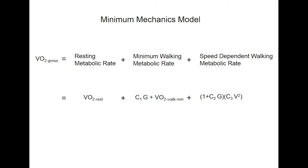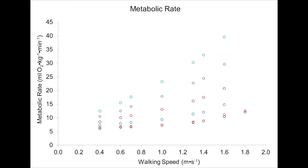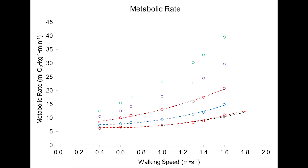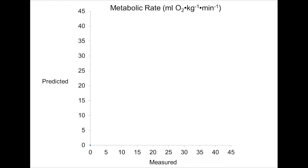Our minimum mechanics model partitions the body's total metabolic rate into a fasted supine resting component, a minimum walking component, and a speed-dependent component. Two inputs are required: grade and walking speed. Our model equation linking economy to the minimum gravitational support and displacement requirements predicted individual trials to within 7.4% and 1 ml of O2 per kg per minute on average.